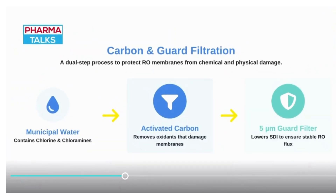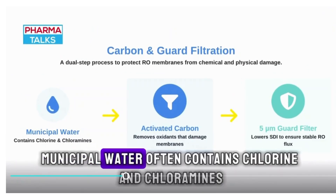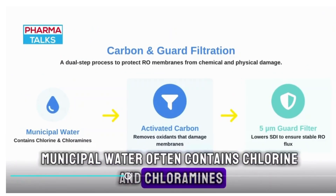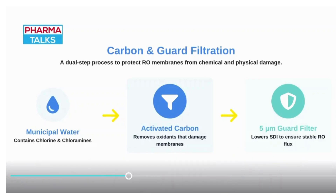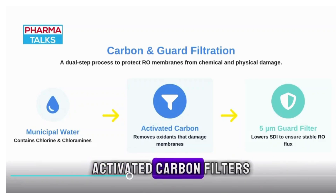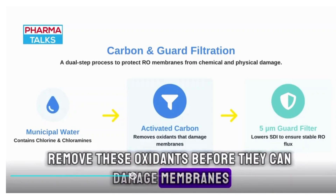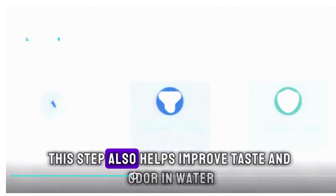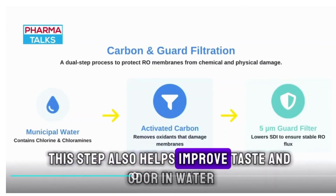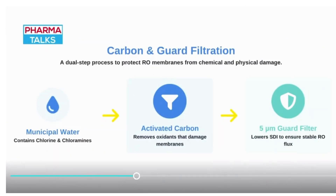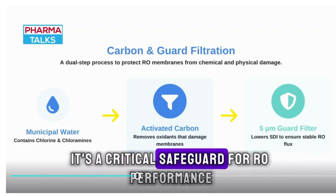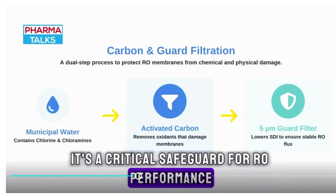Municipal water often contains chlorine and chloramines. Activated carbon filters remove these compounds along with odor in the water. This is a critical safeguard for RO membrane performance.